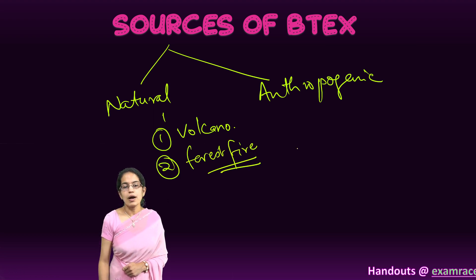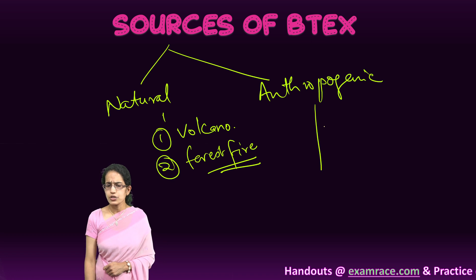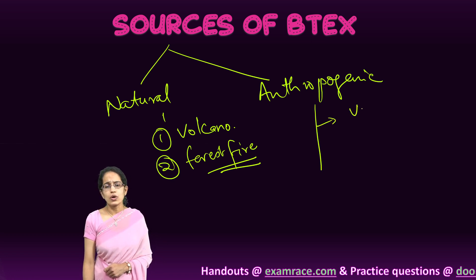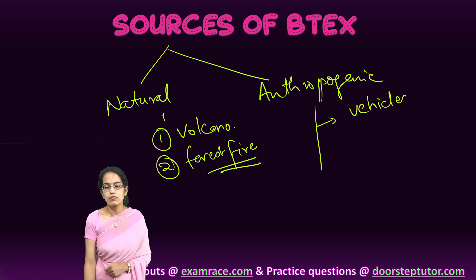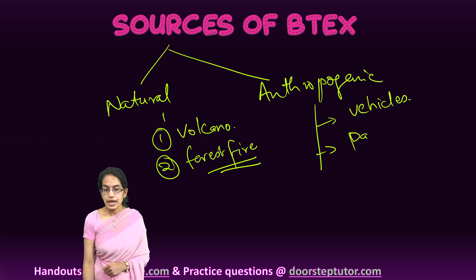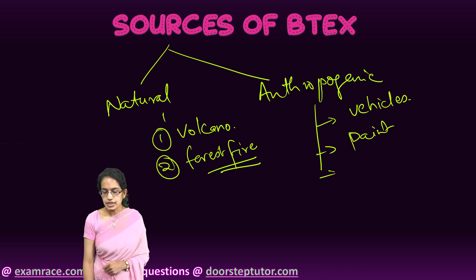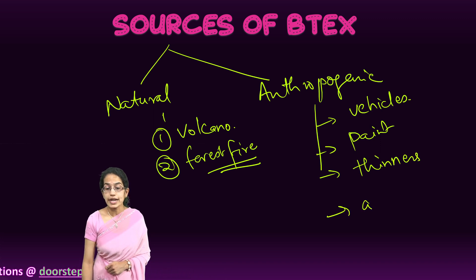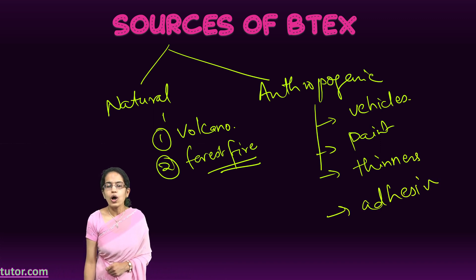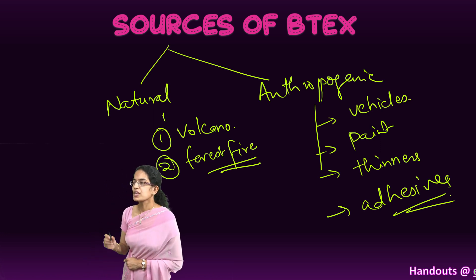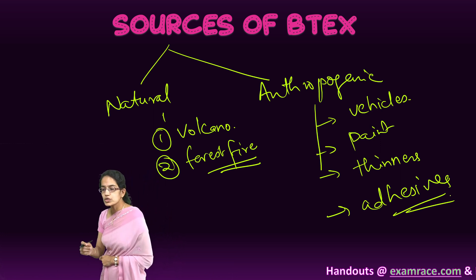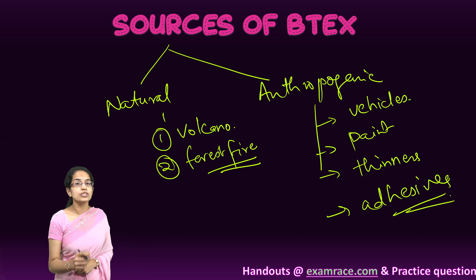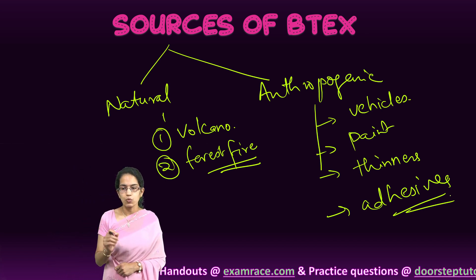However, when we talk about anthropogenic sources, there are numerous sources. When we talk about emissions from vehicles, be it the paint, be it the thinners, the rubber material, the rubber products that are used, the adhesives that are used, all these have BTEX compounds with them. As we said, they are the most abundantly processed chemicals found in the world.